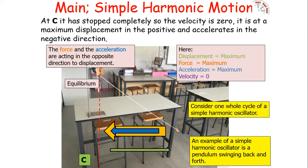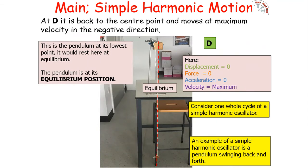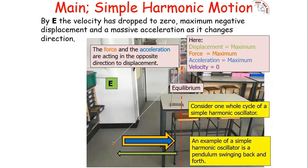Even though the velocity is zero at C, the acceleration is at a maximum but in the opposite direction to displacement, acting back towards equilibrium. At point D, displacement is zero, force is zero, acceleration is zero, but velocity is at a maximum. Even though there's no force on the object at D, it still has inertia — Newton's first law states that if there is no resultant force, an object continues with the same speed and direction. So it continues past equilibrium back to point E, where the cycle begins again.